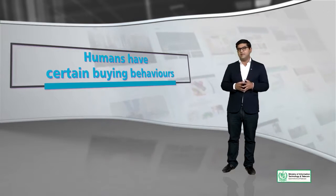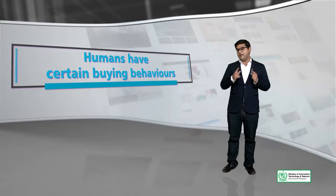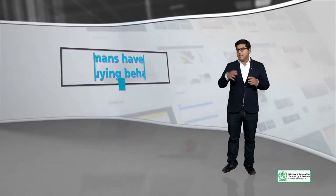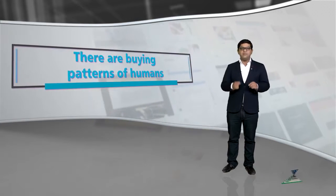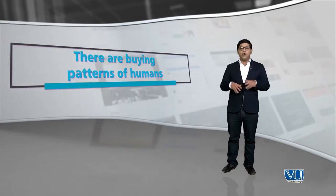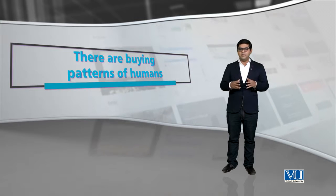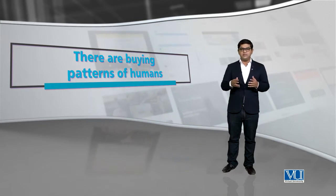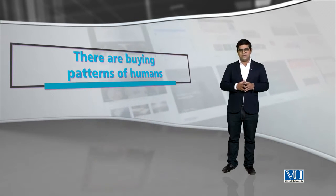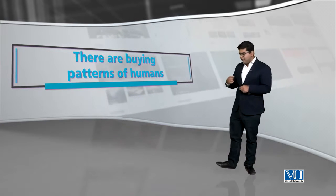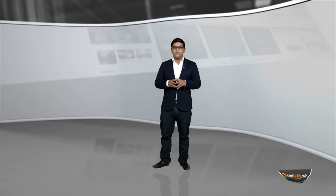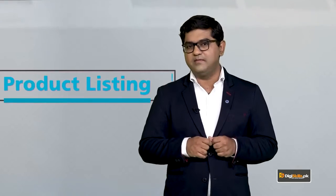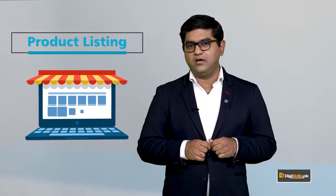Insaan ek tarah se kaam karta hain, aur insaan ko predict kar sakte hain. Jis tarah general commerce mein there are buying patterns of humans, isi tarah online world mein bhi there are buying patterns of humans. Un buying patterns ko humne understand kar lein, aur agar un buying patterns ko hum understand kar lein, we would be able to maximize our product listing.